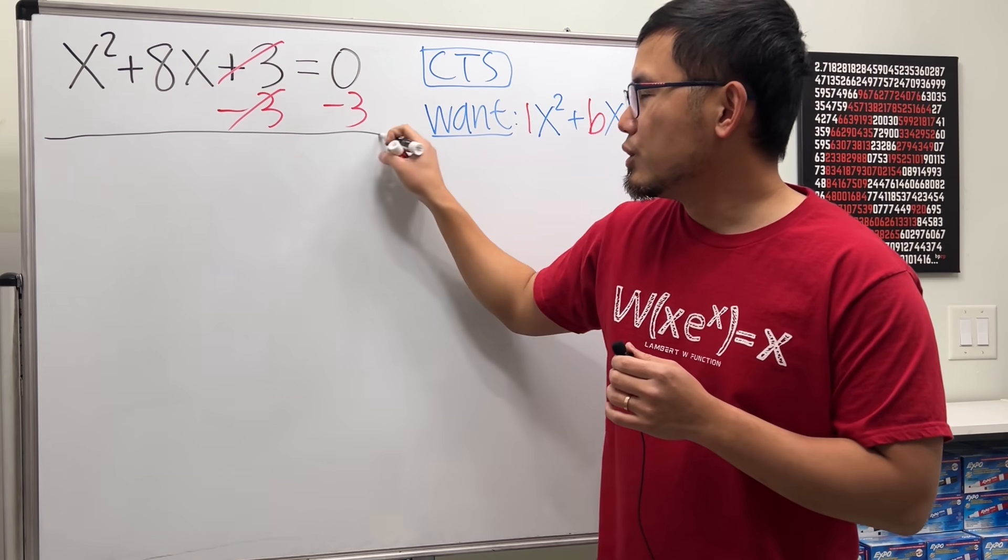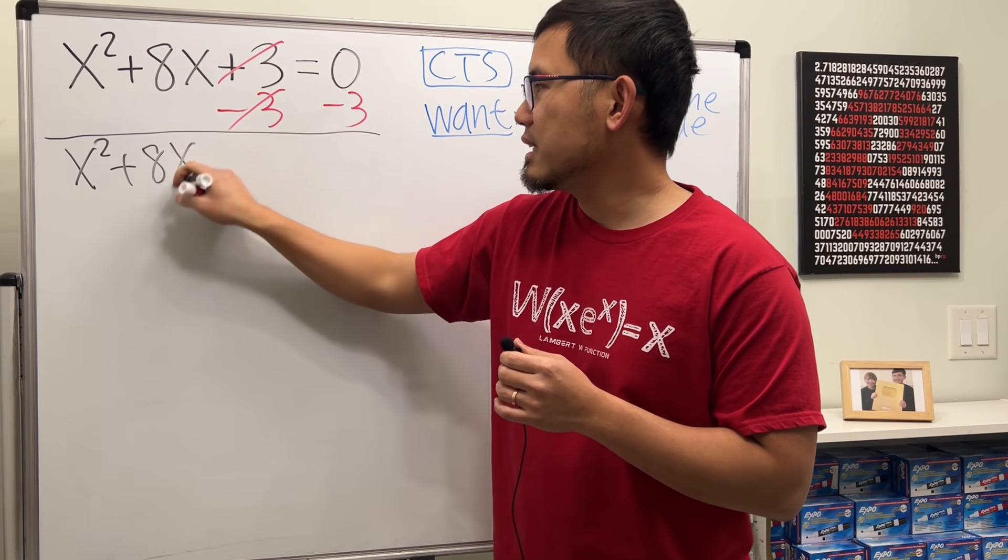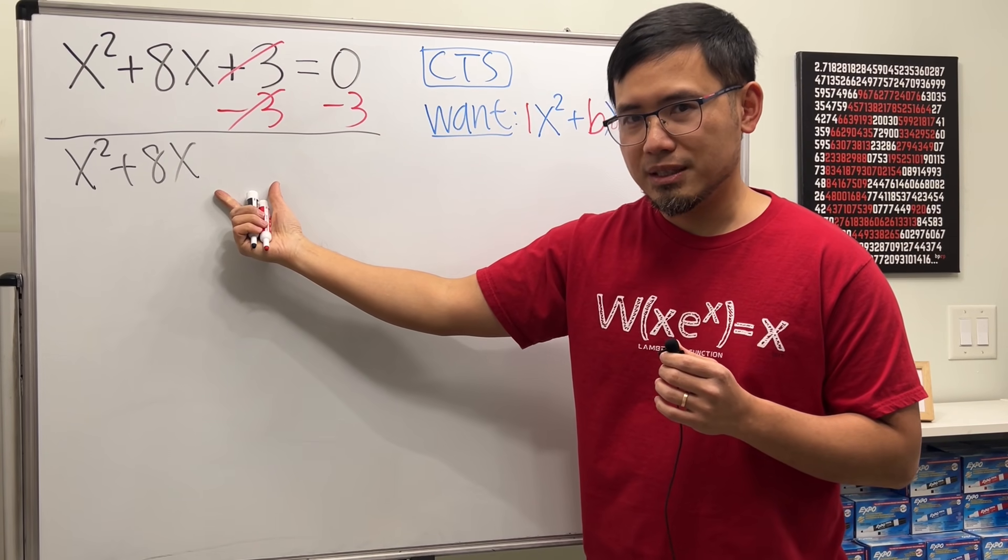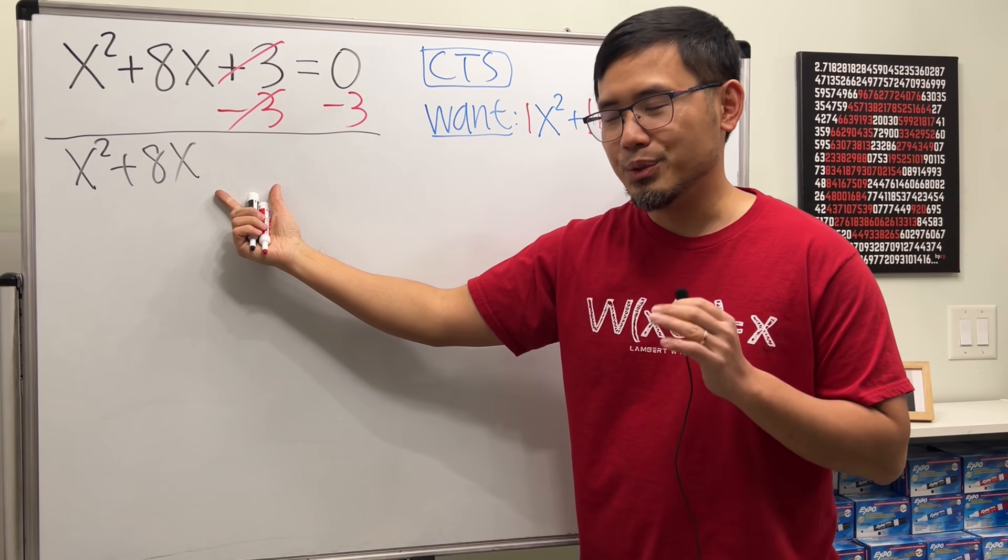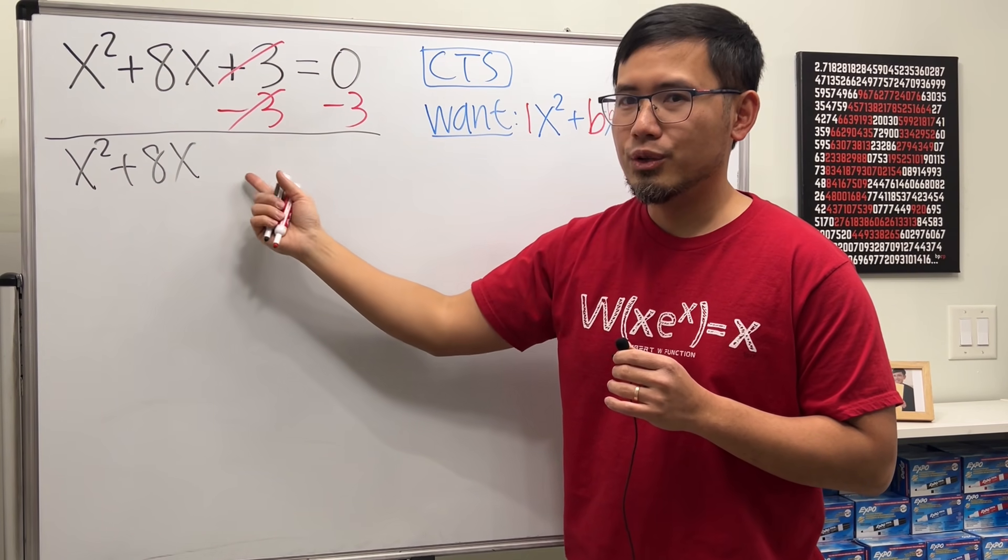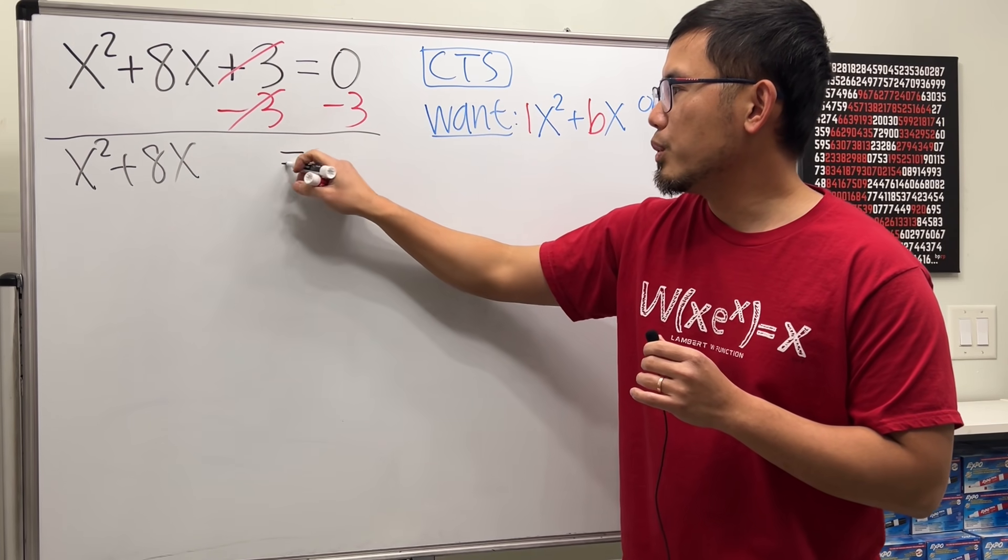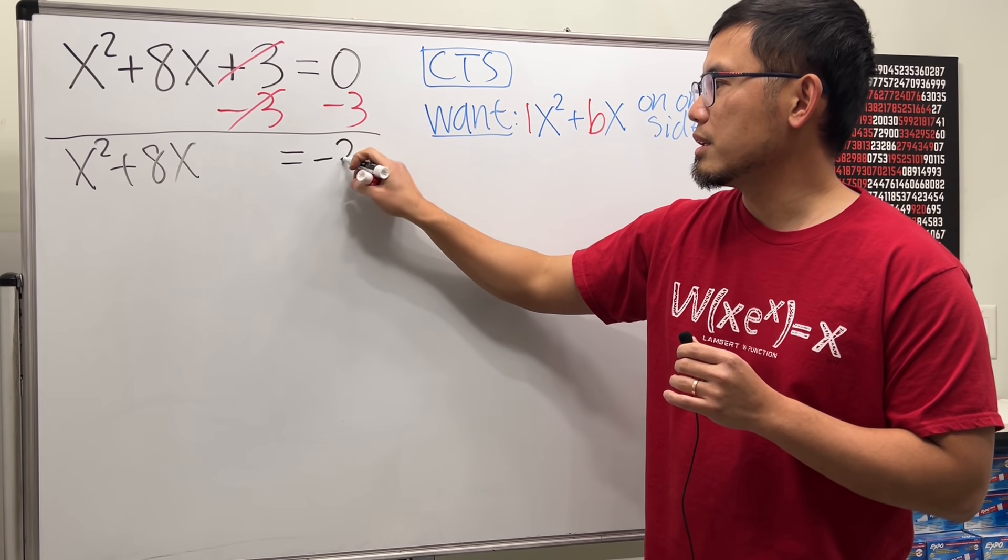And then we can just get x² + 8x and right here just leave a space for magic number. You will see, again the three didn't help. We are going to add a number right here to make this work. So leave a space and this will be equal to zero minus three which is just negative three.